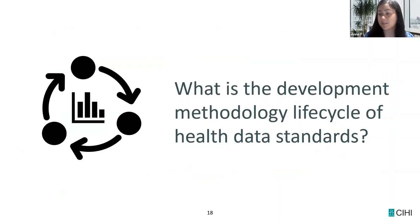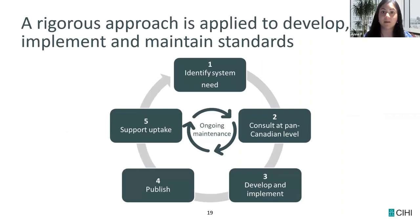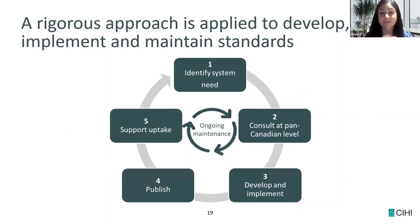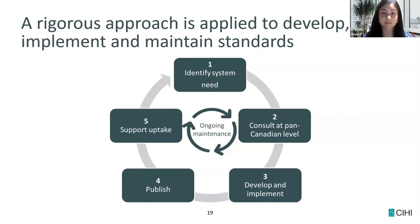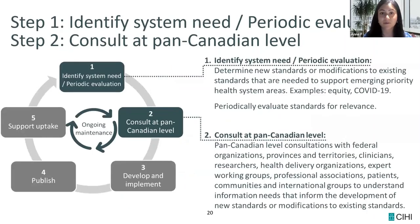What is the development methodology life cycle for a health data standard? CIHI uses a five-step process. The first is identifying a system need. The second is consulting at a pan-Canadian level. The third is developing and implementing the standard. The fourth is publishing. The fifth is supporting uptake. The key thing to note is all of these steps can happen in an iterative way — it's not necessarily rigid. There's constant evolution and refinement as you're building a standard.